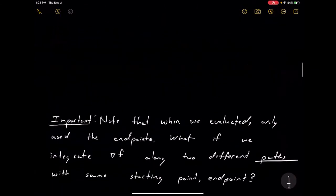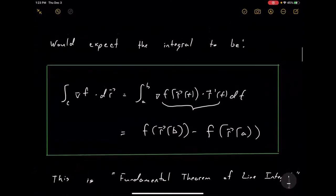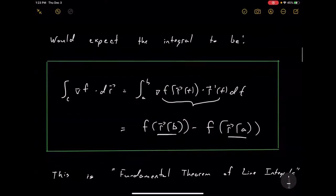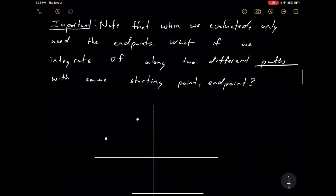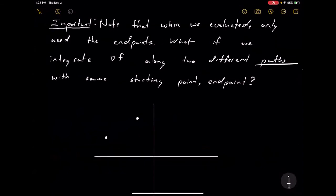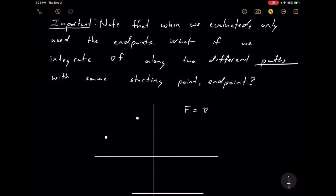The great thing about this theorem is we only need the endpoints. We only need knowledge about the endpoints — we don't have to look at all the points along our curve in between. So let's say I have a conservative vector field F that gives a vector at each point on the plane, and F is actually the gradient of some little function f. If I take the line integral along some curve, I come up with my parameterization R(t), where the start point is (x₁(A), y₁(A)) and the endpoint is (x₂(B), y₂(B)).